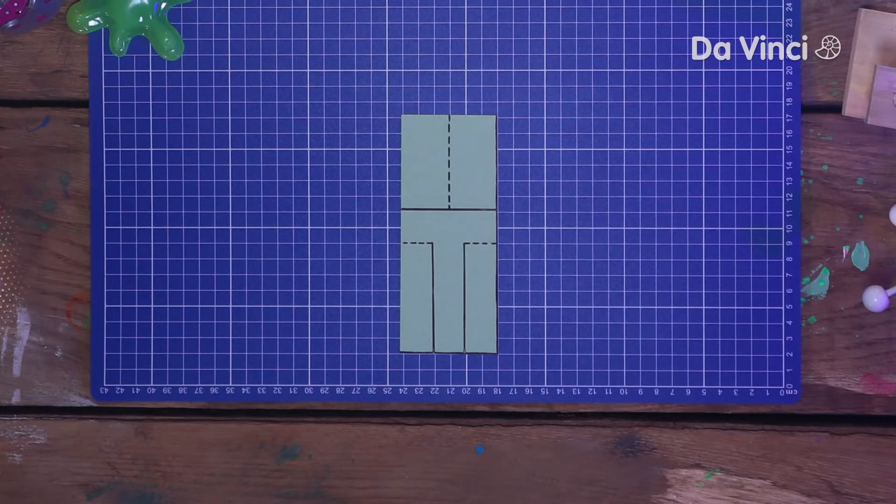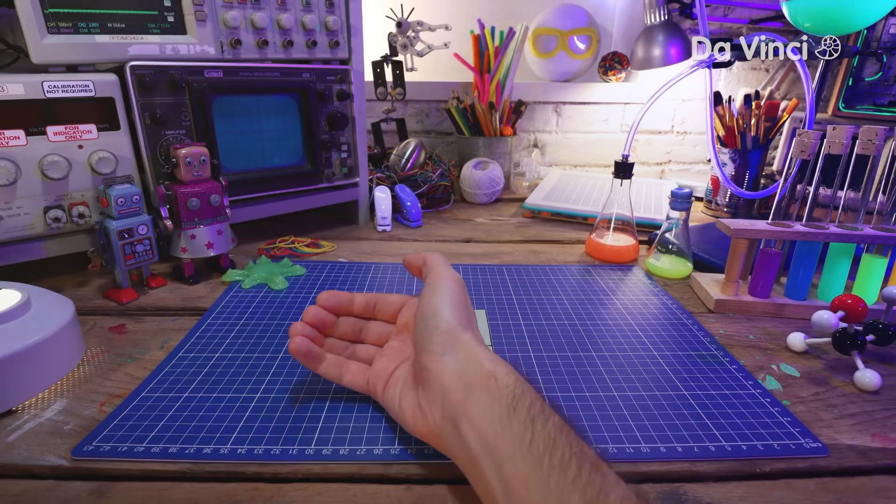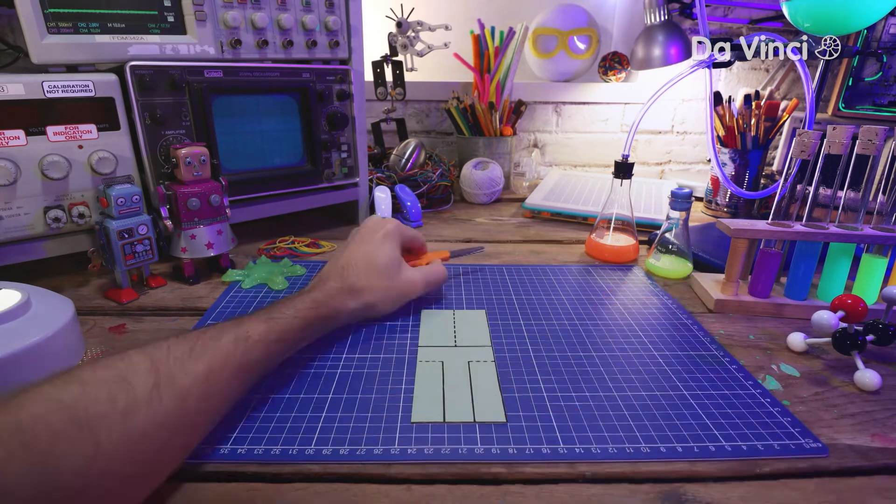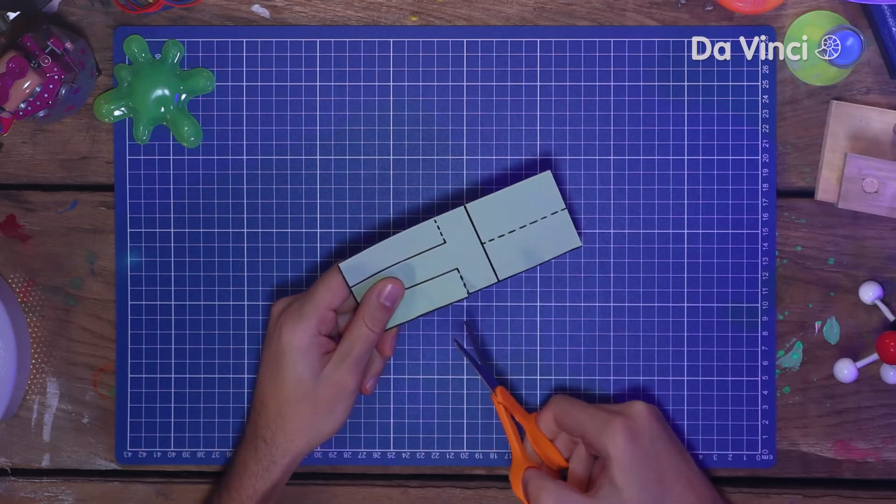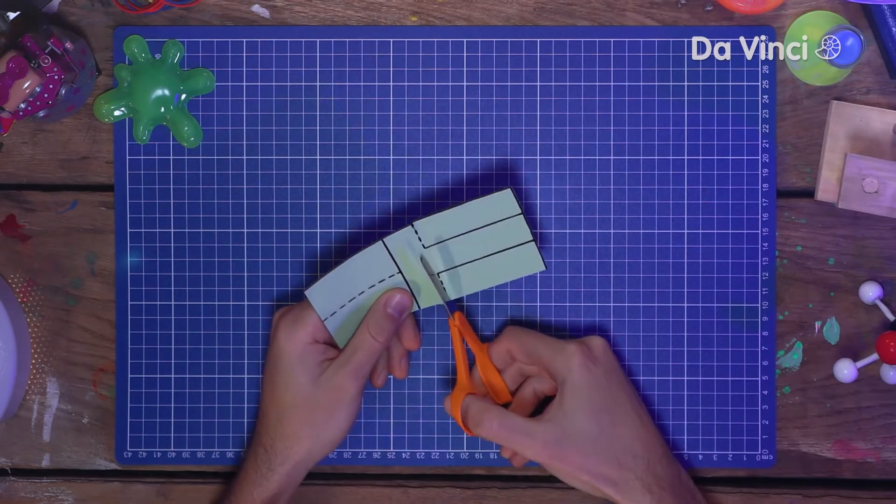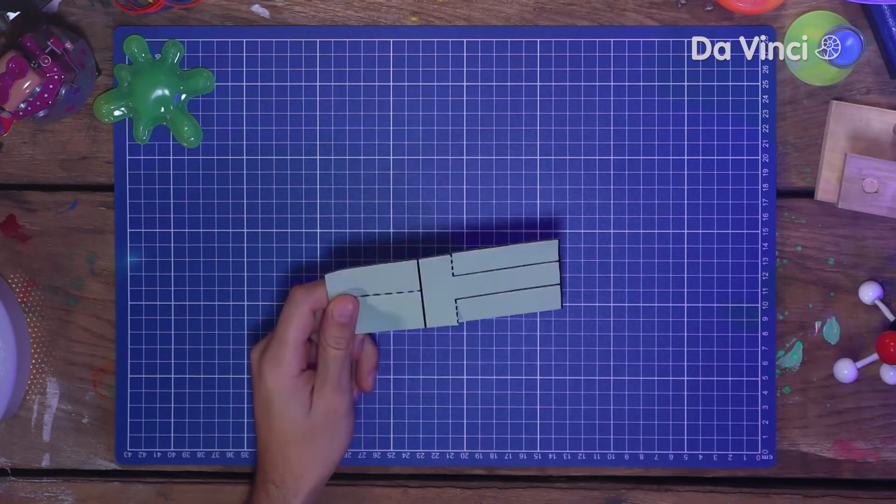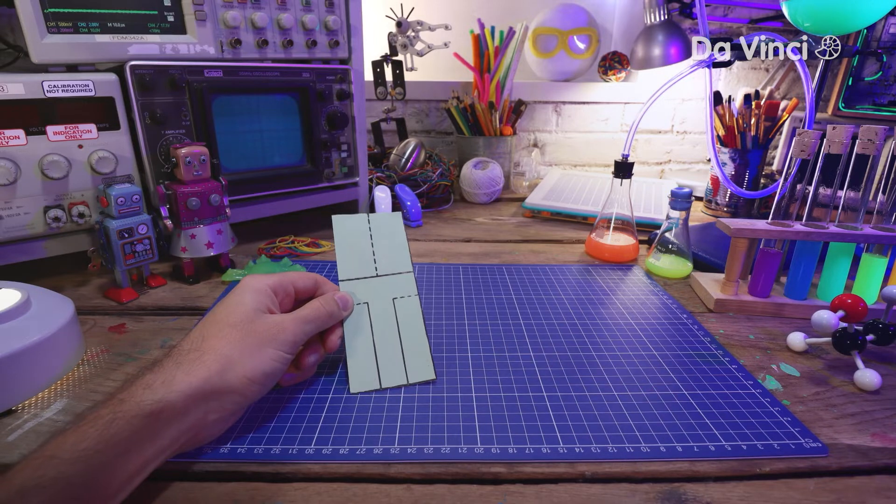Now that you have your template, grab your scissors. Now I have my scissors, cut along the dotted lines. Be careful not to cut all the way across. Now grab some colored markers or anything you'd like and decorate your helicopter.